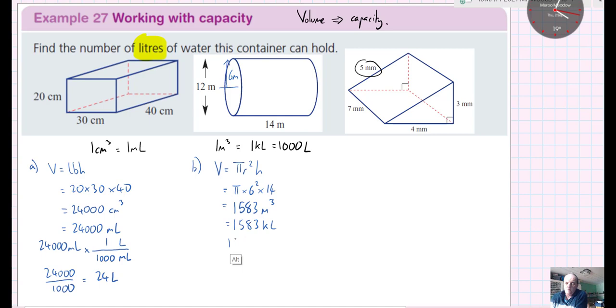And then because of a conversion, that means it ends up being 1,583 kiloliters. And because there are 1,000 liters in a kiloliter, so 1,583 kiloliters times by kiloliters on the top and kiloliters on the bottom. And then liters on the top and 1 kiloliter is 1,000.